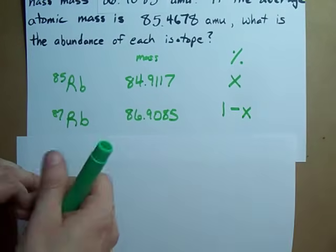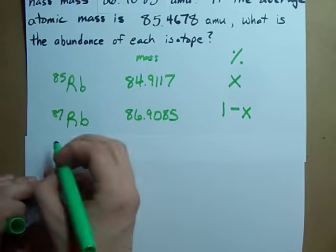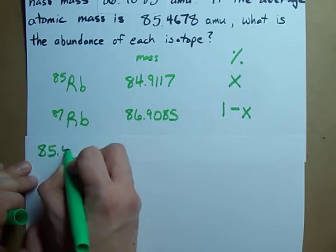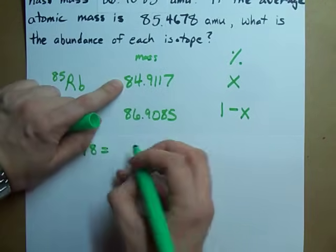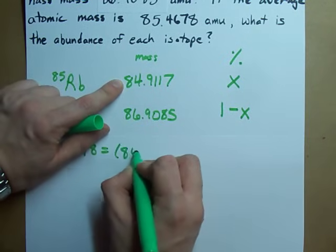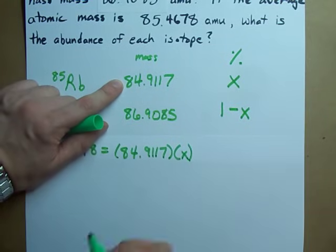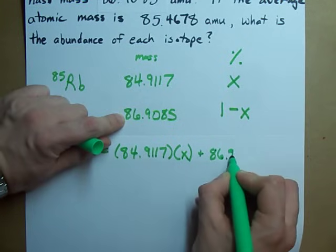we can set up our average atomic mass equation, where the average atomic mass, in this case, which was given, is each isotope's mass times the percent that it accounts for, written as a decimal.